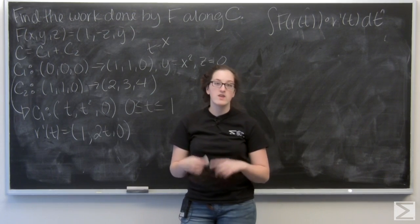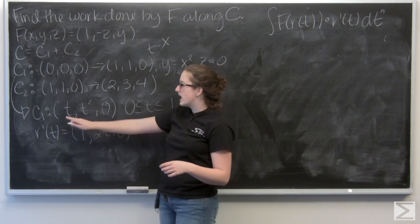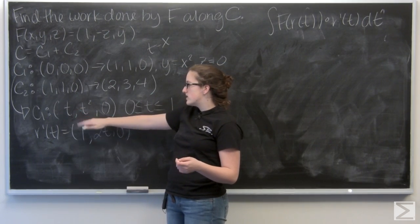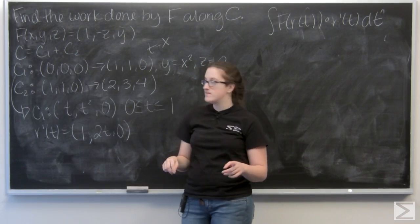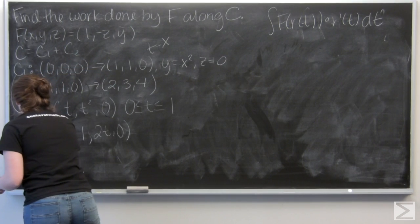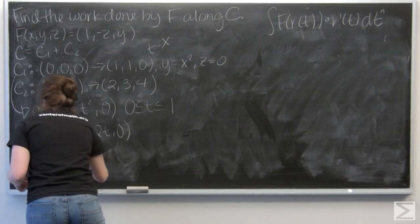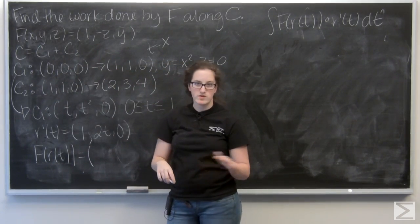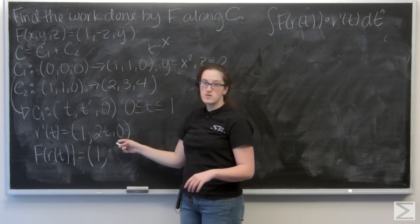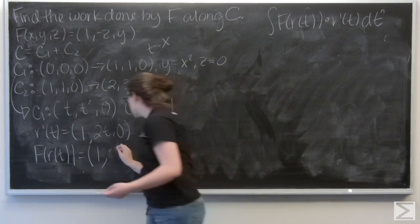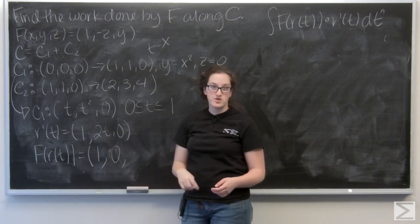And now, let's find f of r of t. So, that means plugging in the i component everywhere I see an x, the j component everywhere I see a y, and the k component everywhere I see a z. So, my first term in f is 1, so that's just going to stay 1. My second term is negative z, while negative 0 is just 0. And then, my last component is y, which is t squared.